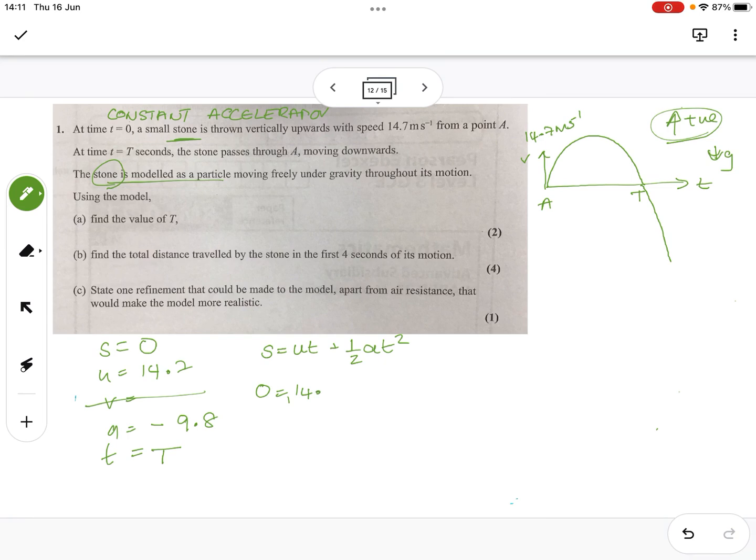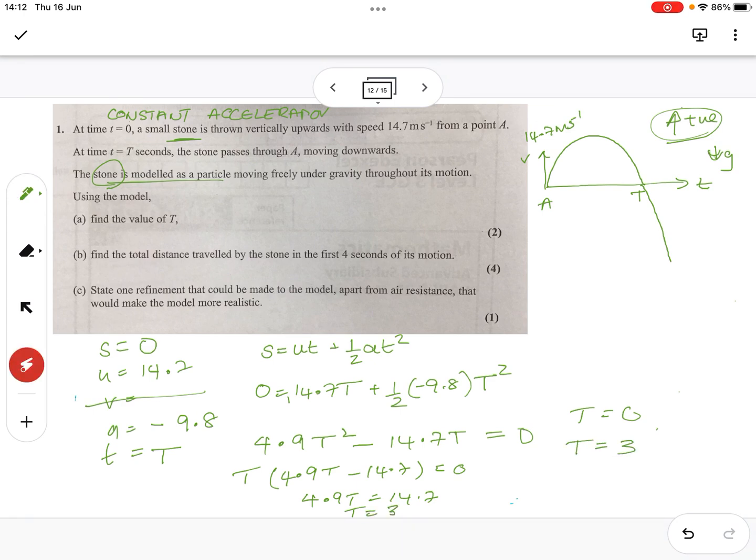S is zero. U is 14.7, t is capital T plus a half minus 9.8 capital T squared. So, that's 4.9. So, I'm going to bring that over the other side. So, I've got 4.9 t squared minus 14.7 t equals zero. With only two terms, I can only use one bracket. I can already see t is zero. So, then 4.9 t minus 14.7 must also be zero. So, 4.9 t equals 14.7. So, t must equal 14.7 divided by 4.9, which gives us a lovely number. T is three. We obviously know t is zero because that's where we started. But, now we know that this t is three.